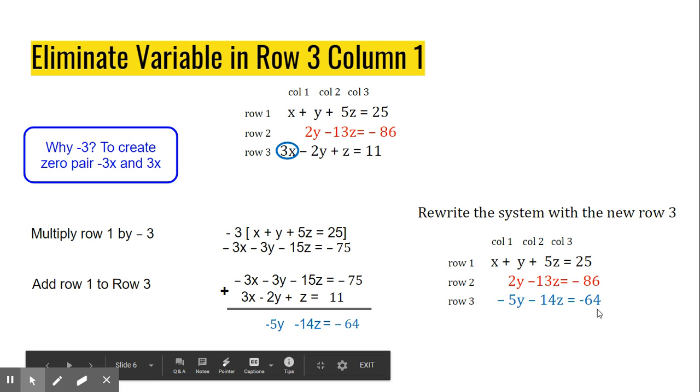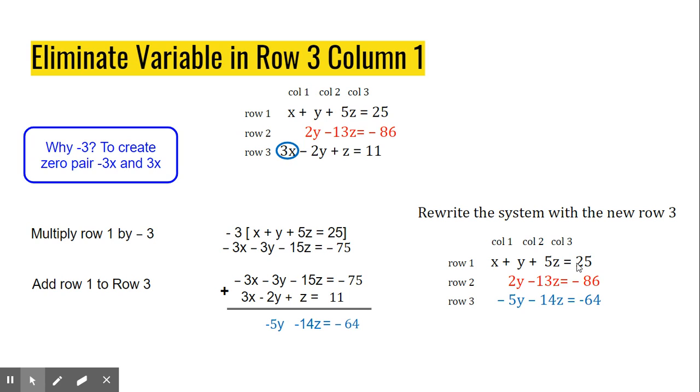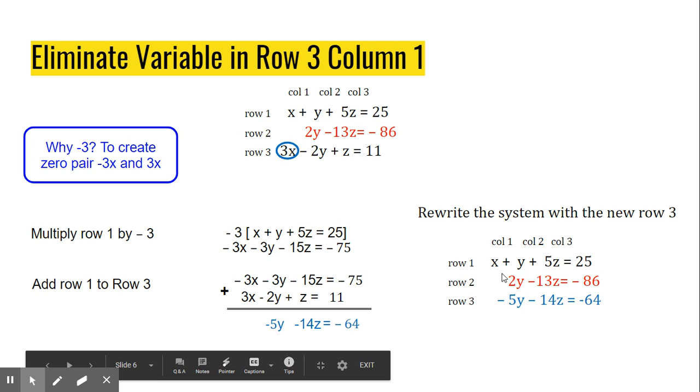And last but not least, an important step is to rewrite your system with your new Row 3. You'll notice that Row 1 still hasn't changed. And throughout this process, it's not. It's going to remain the same. However, we will use it as a tool to eliminate variables as needed. Now you can see I have eliminated the variable in this position. And I have eliminated the variable in this position. And I have rewritten my system. So what's next?